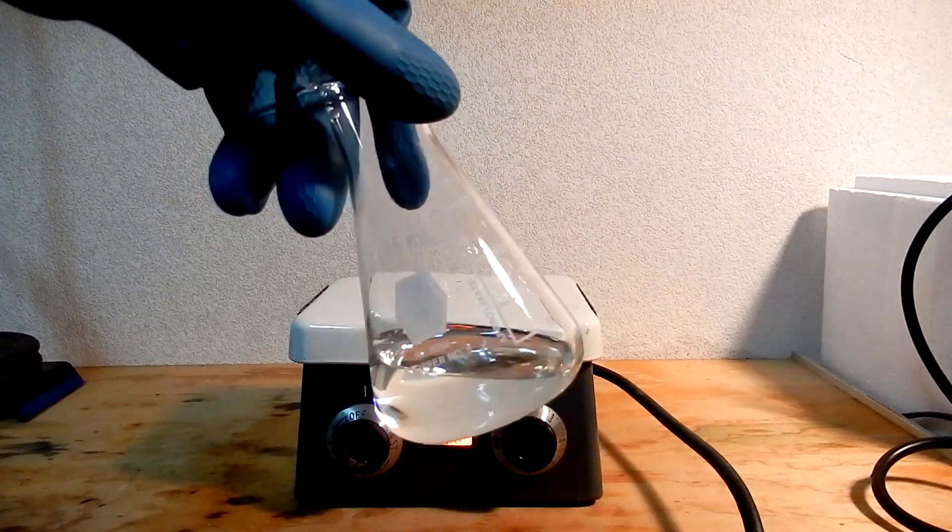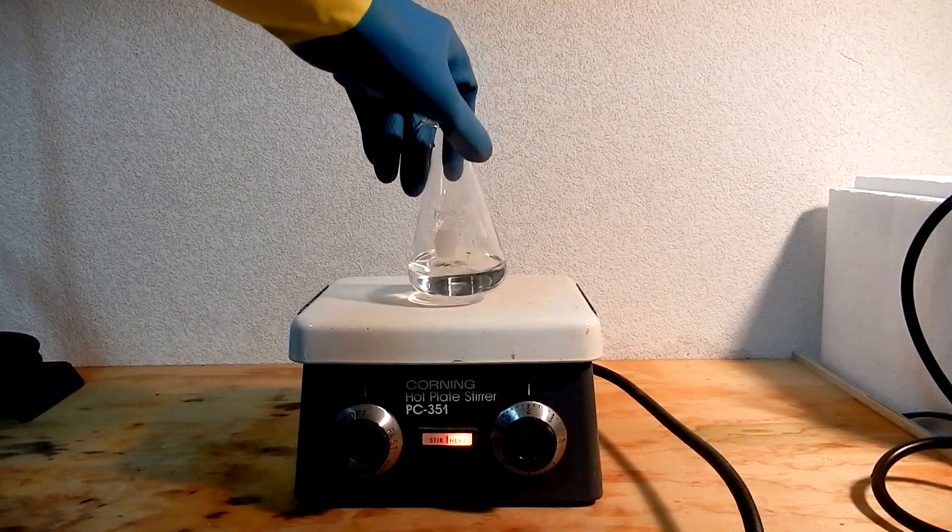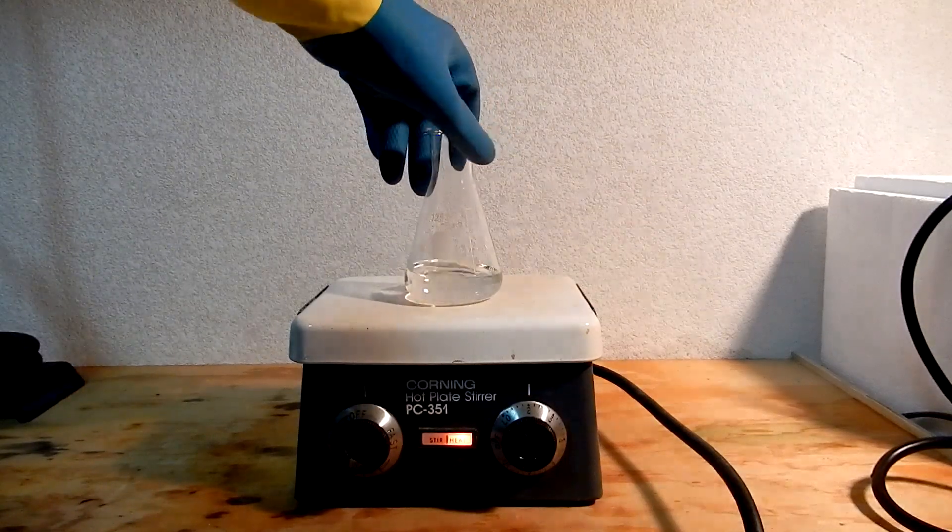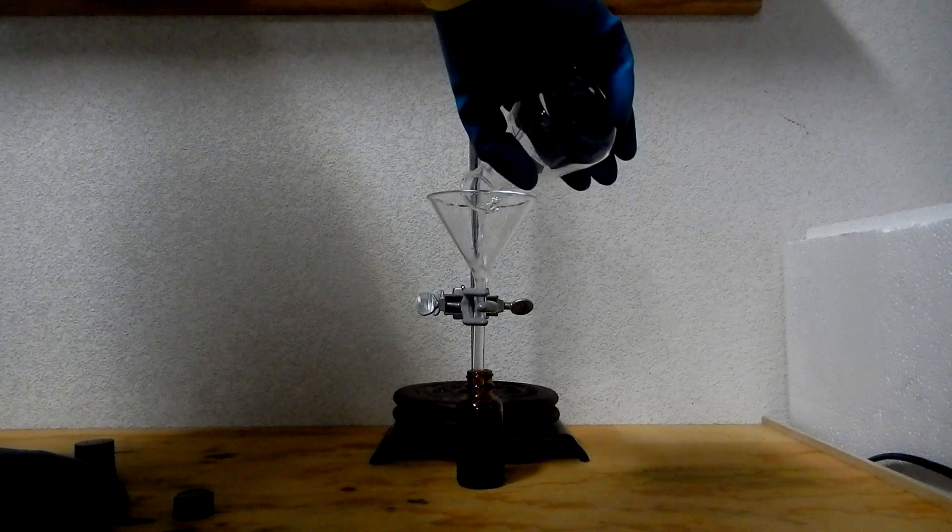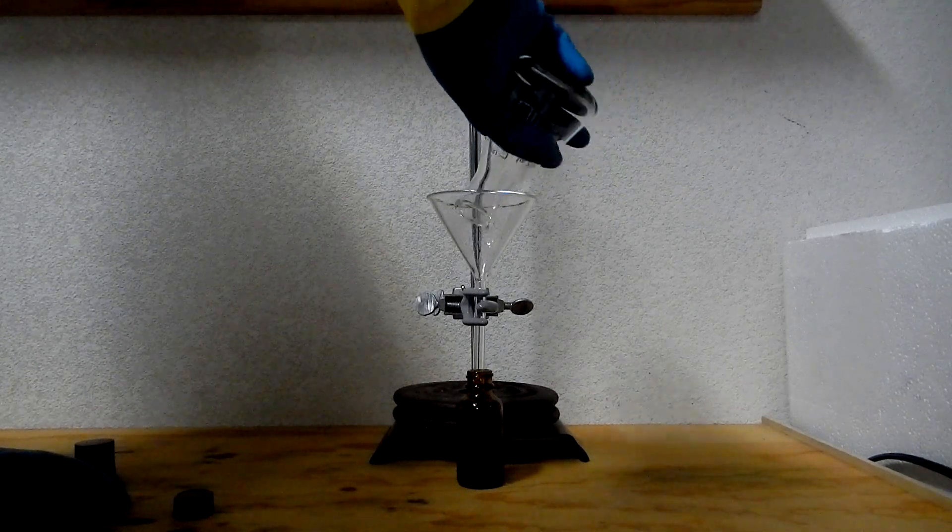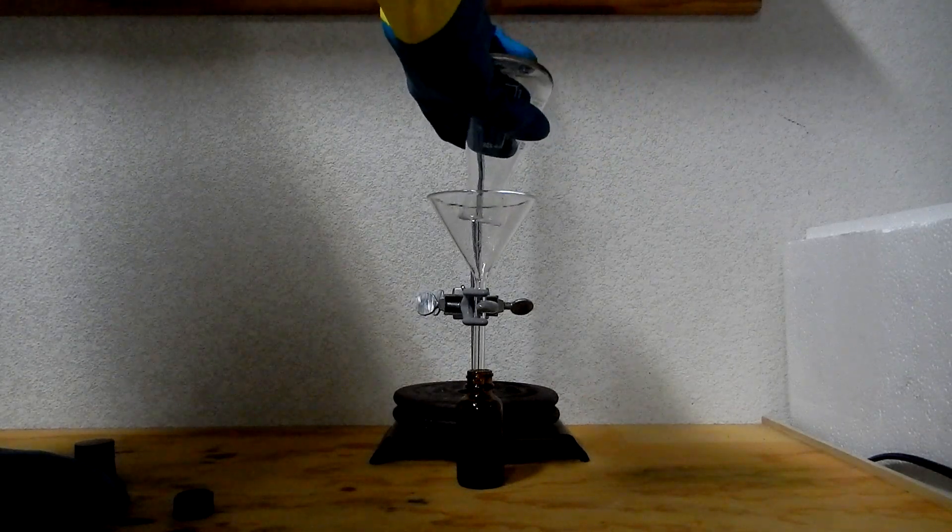Continue to gently heat the mixture until it stops losing mass. This indicates that all dichloromethane has evaporated. Once all the dichloromethane has been evaporated, transfer the pure colorless chlorobenzene to a suitable bottle for storage.